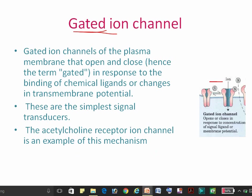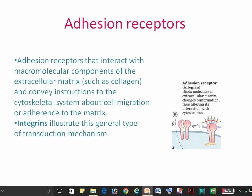The fourth one is the gated ion channel receptor. In this type of receptor, whenever there is a change in membrane potential or binding of chemical ligands, the channel is opened and closed — that is why it is called a gated ion channel receptor. Acetylcholine is one example of a ligand for this receptor.